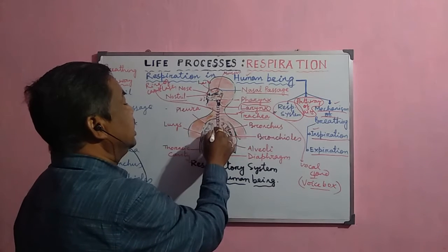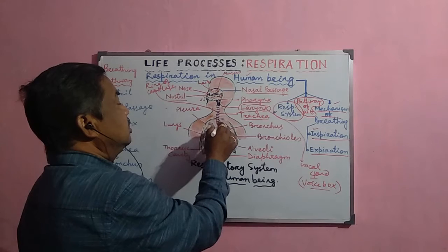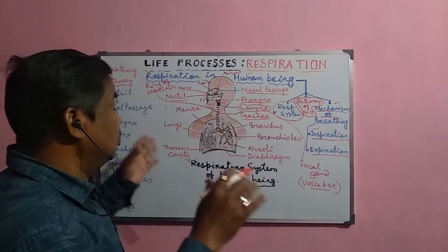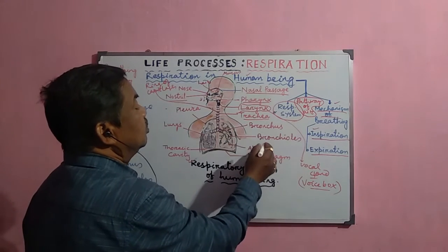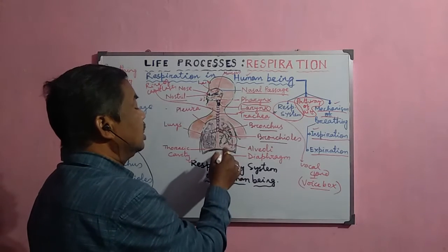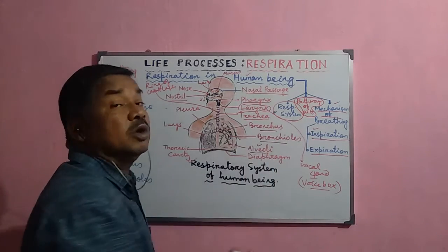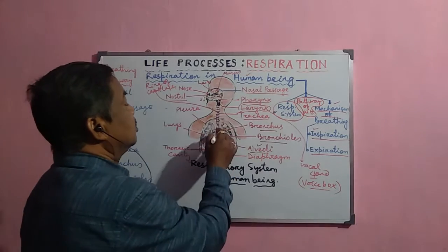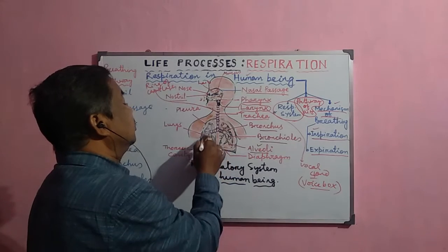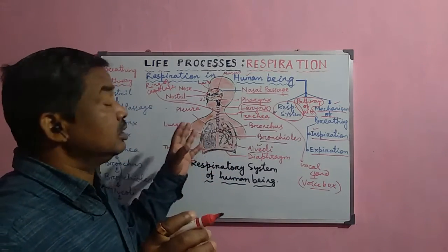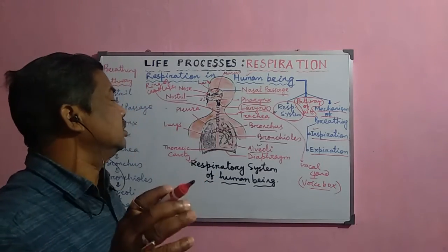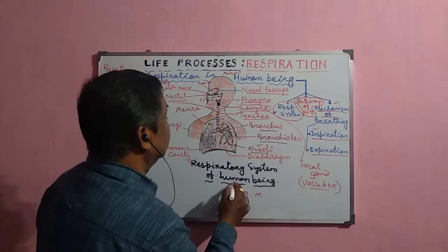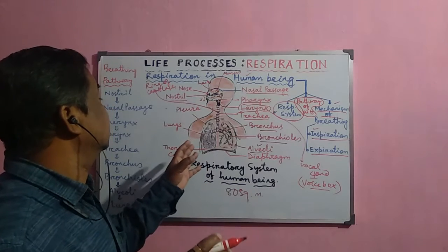When the trachea enters the thoracic cavity, it divides into two bronchi, one going to each side. Each bronchus divides into several branches to form bronchioles, which further divide and re-divide to form the alveoli. The alveoli are small sac-like structures where the exchange of gases actually occurs. This structure is the lungs — there are two lungs, one on either side — a spongy structure providing a large surface area of around 80 square meters for gas exchange.